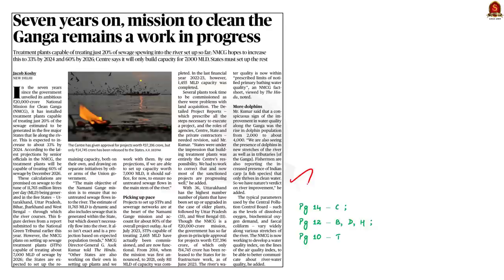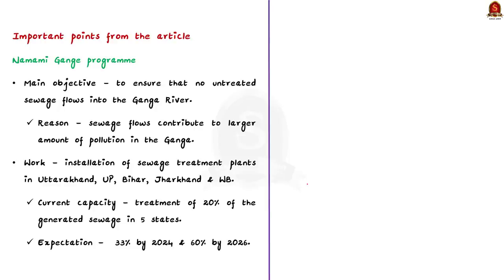In 2014 the central government launched the Namami Ganga program. The main aim of this program is to reduce pollution in the Ganga river by improving sanitation levels along the river. The program also aims to conserve and rejuvenate the polluted Ganga river. In 2016 the central government set up the National Mission for Clean Ganga, responsible for implementation of the Namami Ganga program.